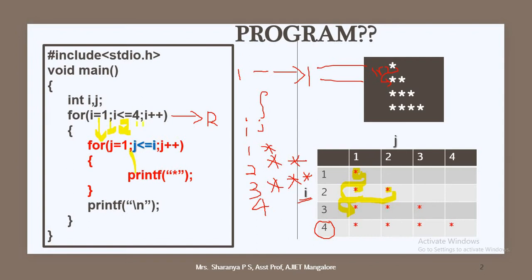Next, i is incremented to 3. With i value 3, the inner loop runs again by initializing j back to 1. 1 is less than or equal to 3 — condition is true, first star is printed. j incremented to 2: 2 is less than or equal to 3 — condition is true, next star is printed. j incremented to 3: 3 is less than or equal to 3 — condition is true, third star is printed. j incremented to 4: condition is false, new line character is printed.